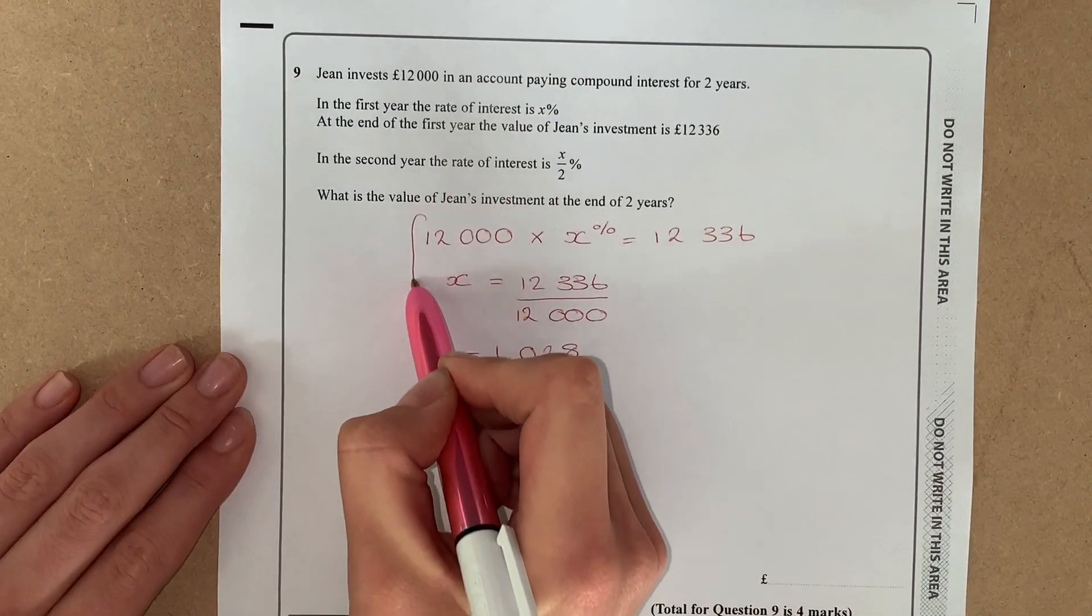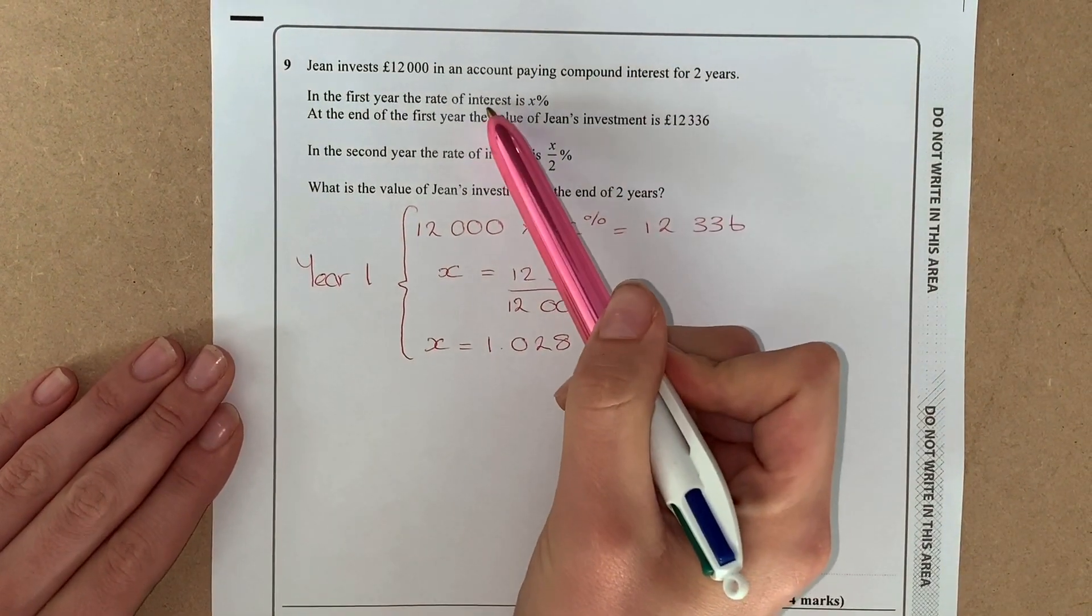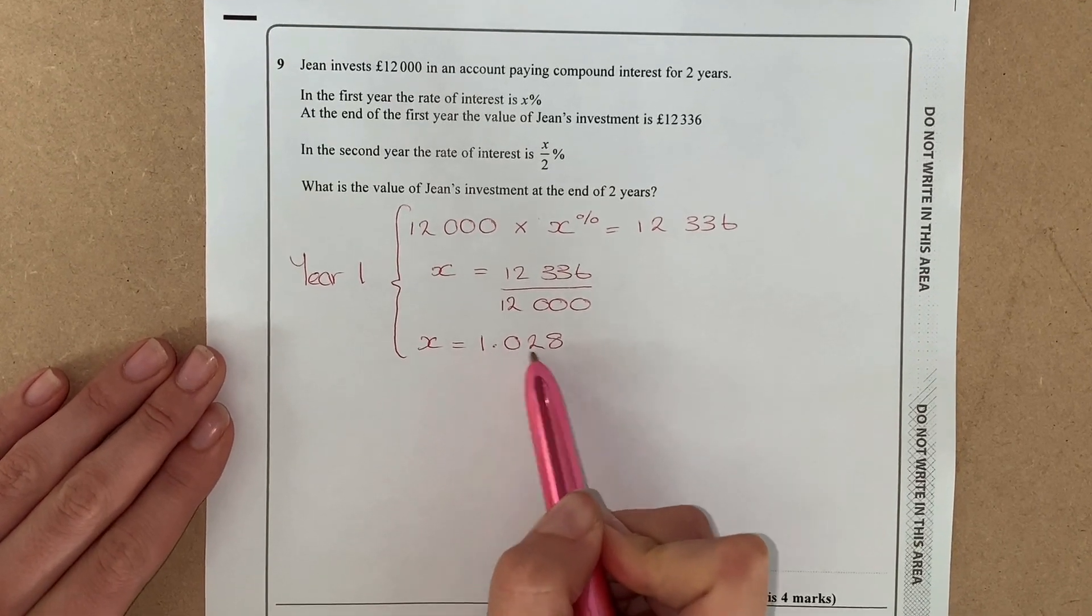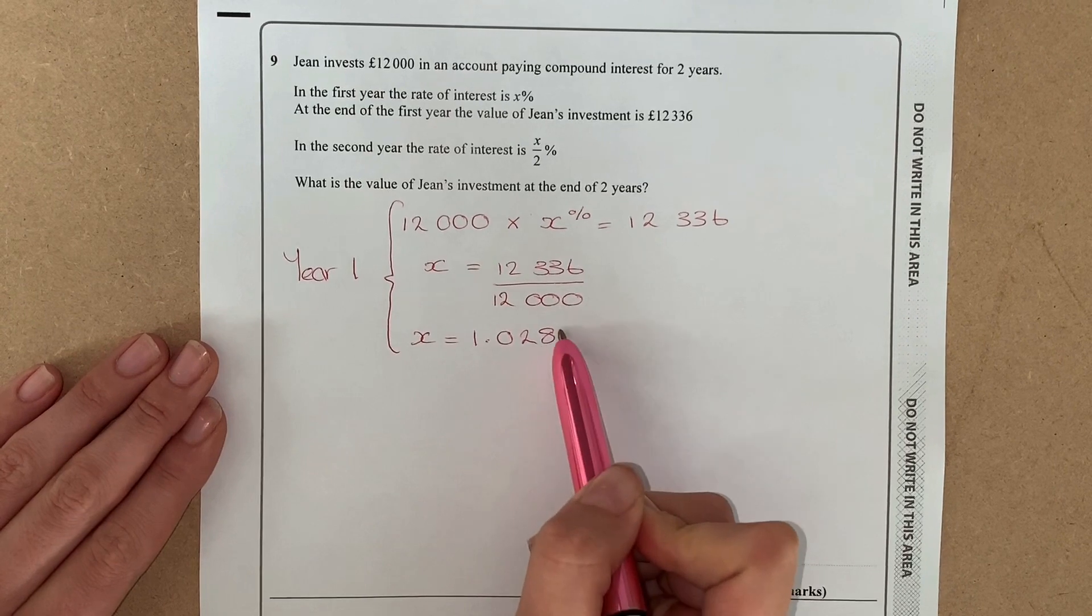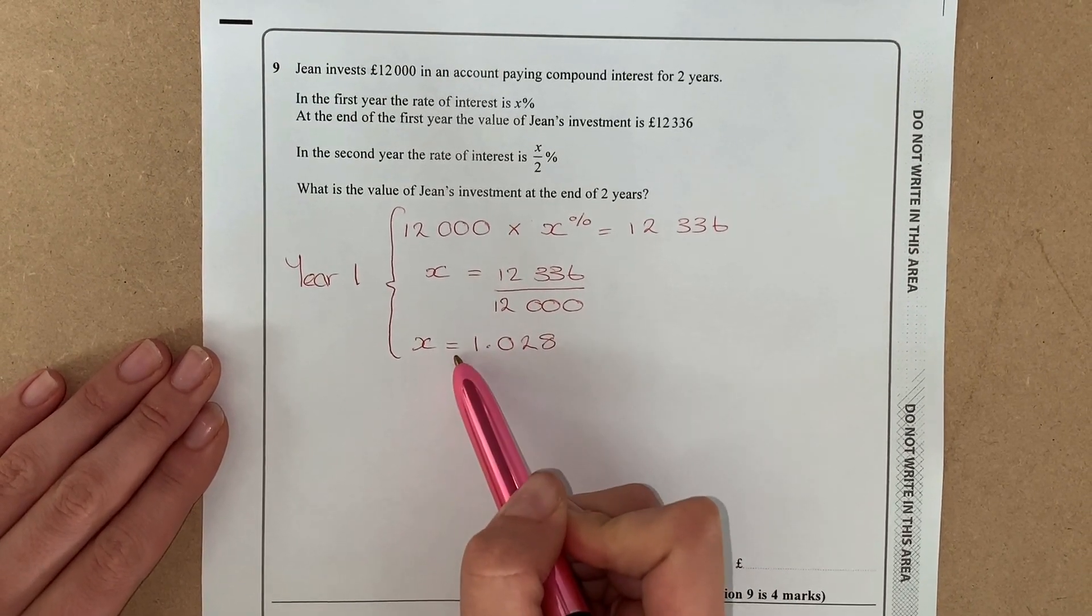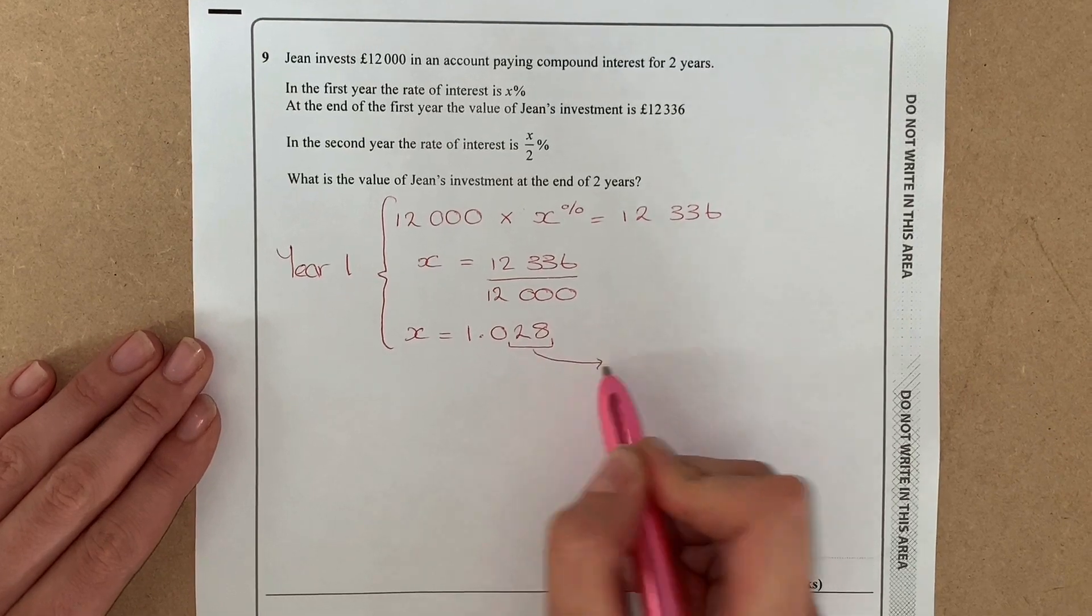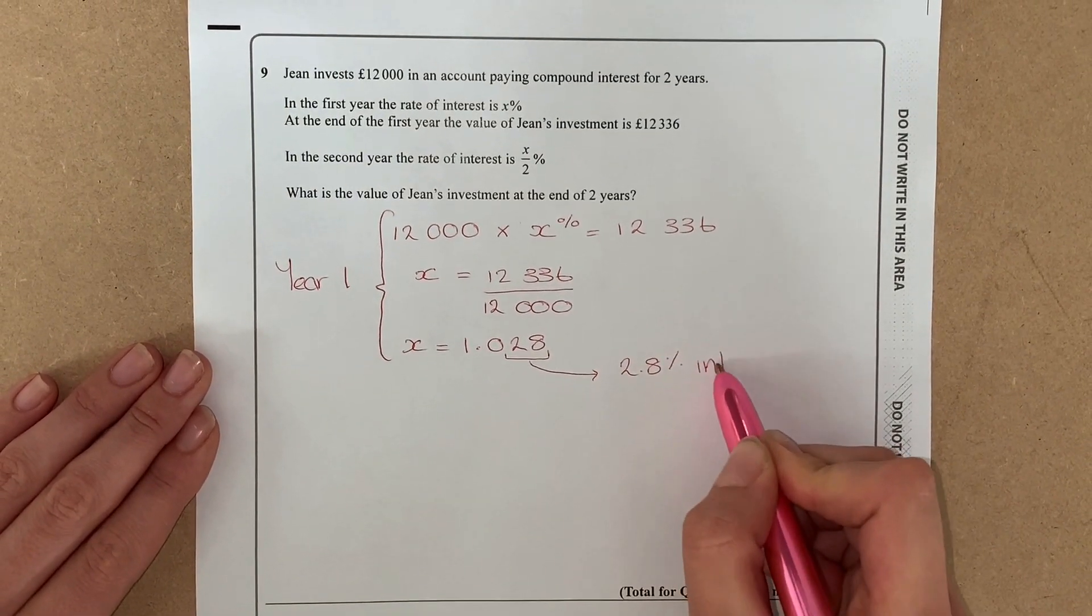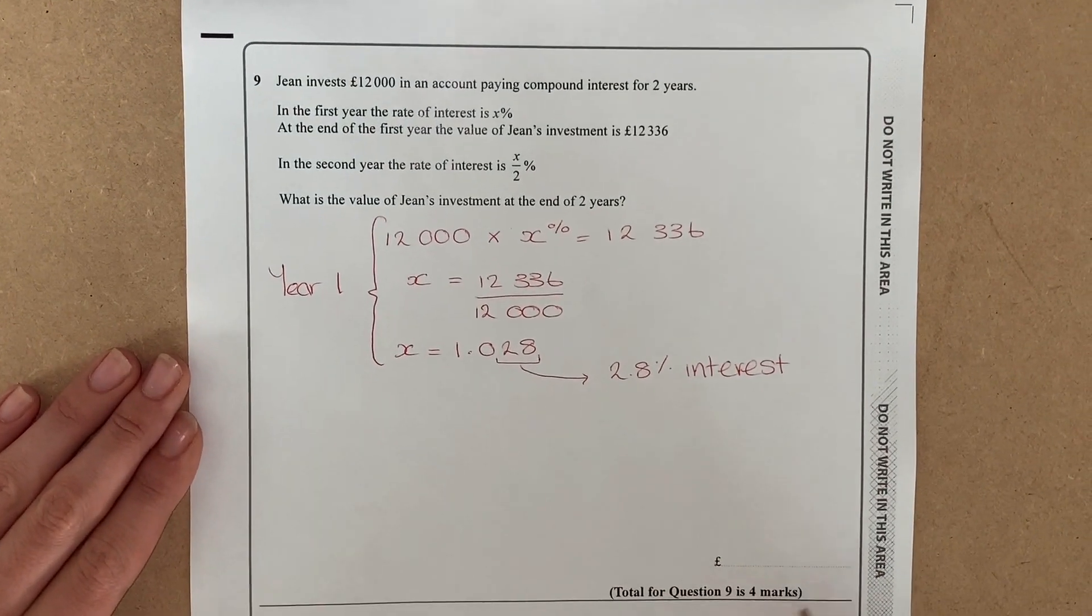So I'm just going to tidy that up and call that year one. But what was the rate of interest? So we've got this x is worth 1.028, but actually we need to remember that with compound interest we have 100 percent of the amount plus the interest, so the interest was actually 2.8%. So I'm going to write 2.8% interest.